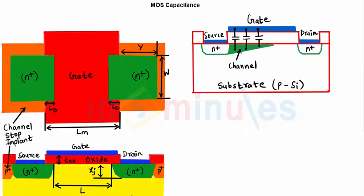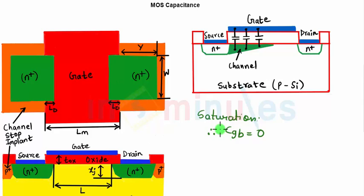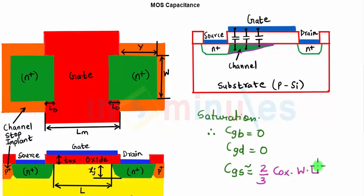In the saturation region, the channel has pinched off near the drain. The channel still shields the gate from the substrate, so CGB = 0. Since there is no channel connected to the drain, CGD = 0 as well. The remaining capacitance is CGS, which corresponds to a trapezoidal-shaped channel. Through derivation, this gives CGS ≈ (2/3) × COX × W × L, representing the gate-to-channel capacitance seen between the gate and the source terminal.